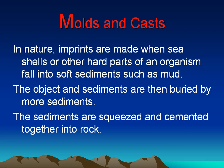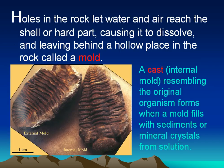In nature, imprints are made when seashells or other hard parts of an organism fall into soft sediments, such as mud. The objects and sediments are then buried by more sediments. The sediments are squeezed and cemented together into rock. Holes in the rock let water and air reach the shell or hard part, causing it to dissolve, and leaving behind a hollow place in the rock called a mold. A cast, or internal mold, resembling the original organism, forms when a mold fills with sediments or mineral crystals from a solution.